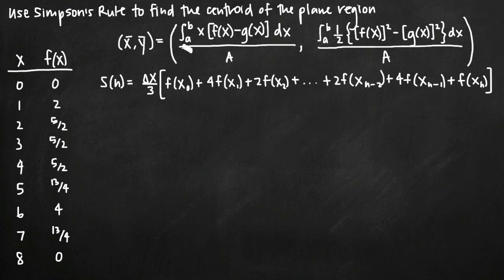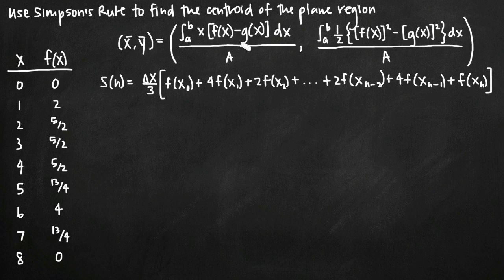The centroid of the plane region is a coordinate point written as (x̄, ȳ). There's a formula that gives us the x-value and another for the y-value in that coordinate point. There are really only three things we need to find and then plug into the centroid formula: first is A, the plain area under the curve, which we find with Simpson's rule. We also need the values of two specific integrals.